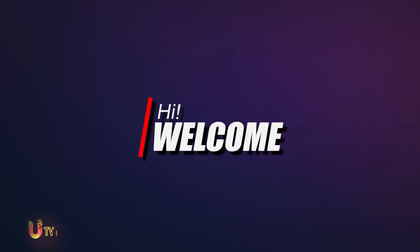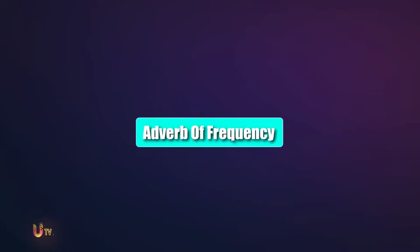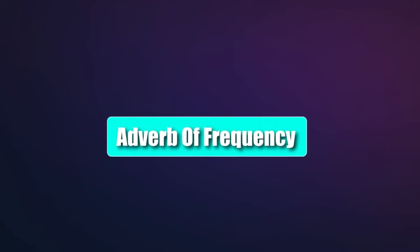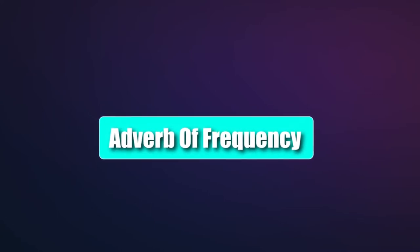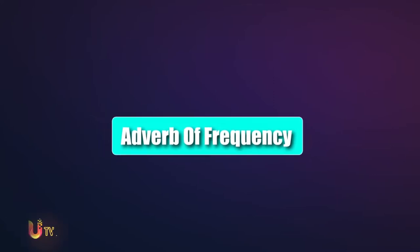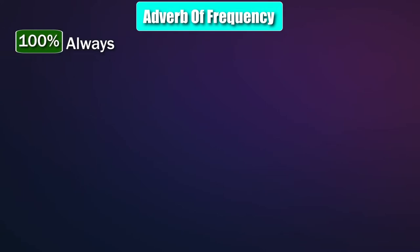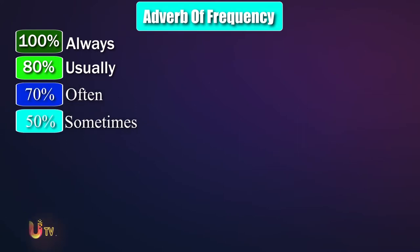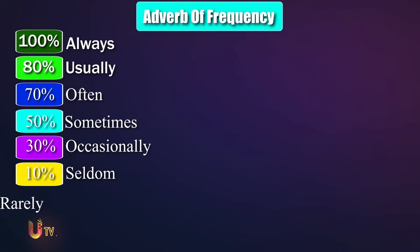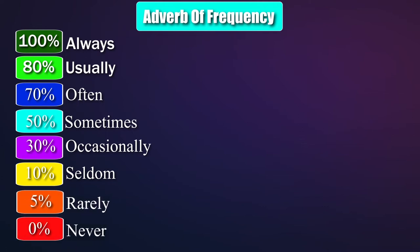Hi and welcome to UTV channel. In this lesson we are going to learn about adverbs of frequency. We always use adverbs of frequency to discuss how often an action happens. There are eight main adverbs of frequency that we use in English: always, usually, often, sometimes, occasionally, seldom, rarely, and never.